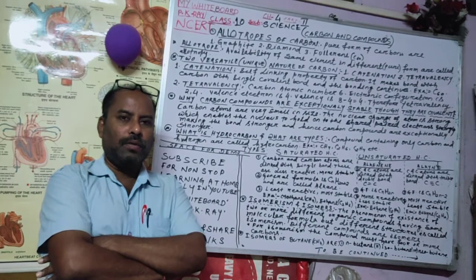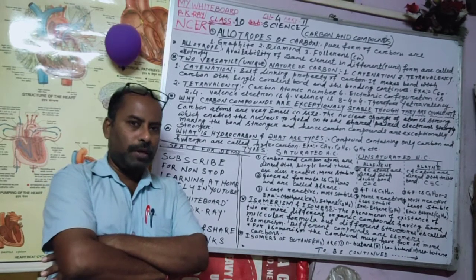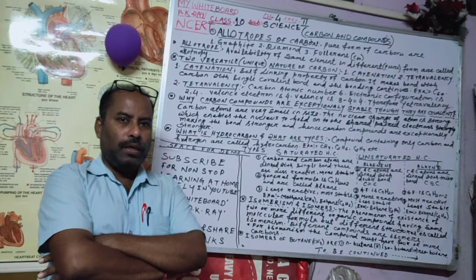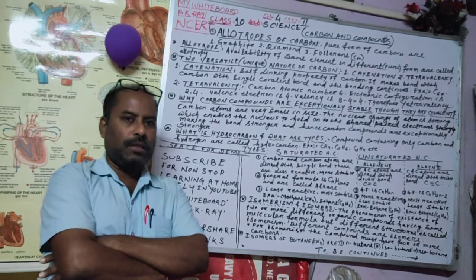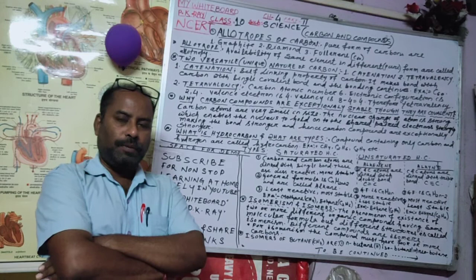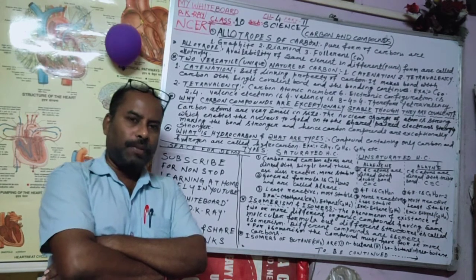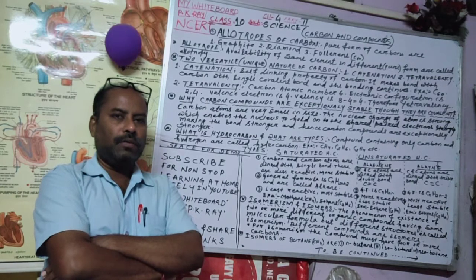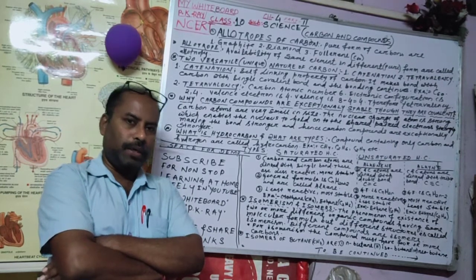Welcome students to my whiteboard program. Today we have to discuss Class 10 Science Chapter 4, Carbon and Compounds, second part. Last class we covered the first part of Carbon and Compounds; today we will discuss the second part.